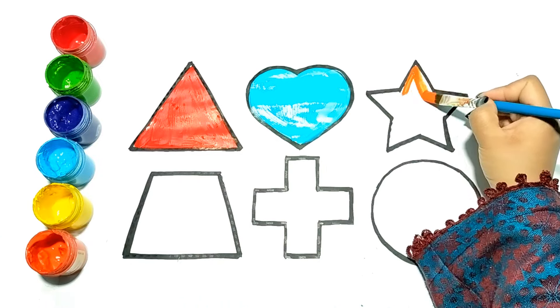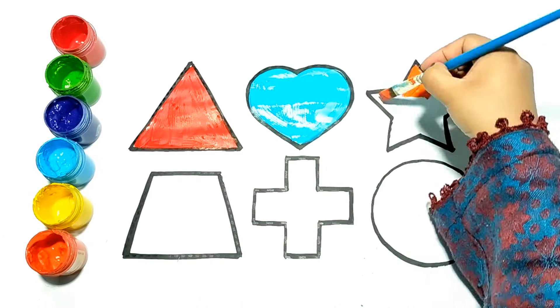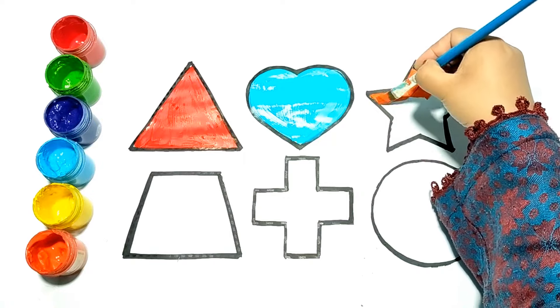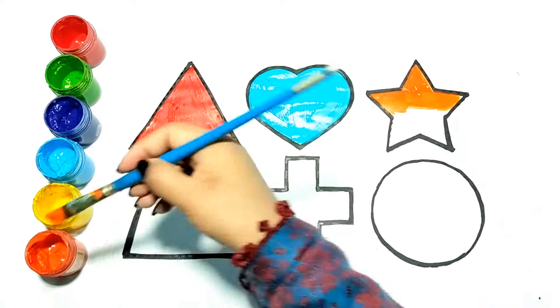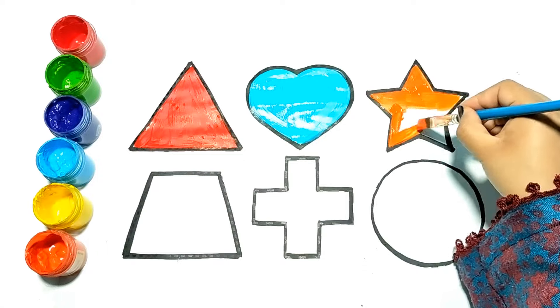Let's paint the next shape. Do you know the name of this shape? Yes, it is a star. I am painting it with orange color.